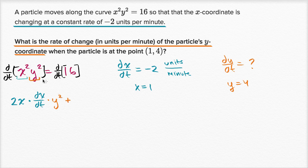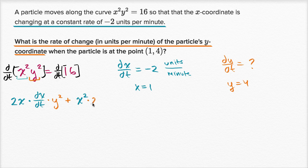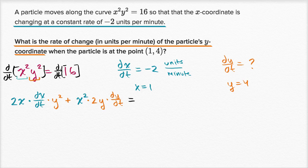Then that's going to be plus the first function x squared times the derivative of the second function with respect to t. Applying the chain rule again, the derivative of y squared with respect to y is two y, times dy/dt. And that is going to be equal to the derivative with respect to t of 16, which doesn't change over time, so that's just equal to zero.